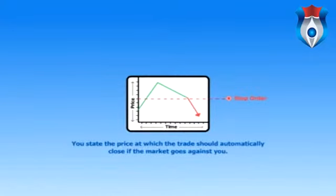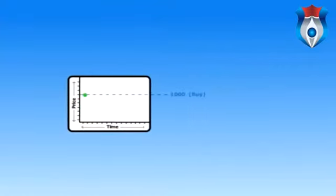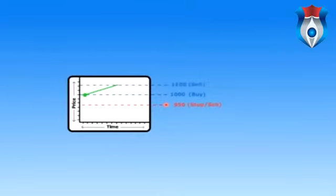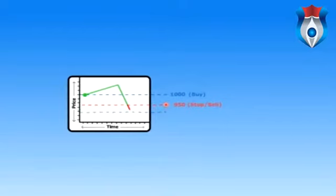A good way to minimize the amount of money you could lose on a trade is to use a stop order — you state the price at which the trade should automatically close if the market goes against you. For example, if you buy a market at 1000 and set a stop order to sell at 950: if the price rises to 1100 you make a profit of 100, but if it drops to 950 the trade automatically closes and the maximum you lose is 50.